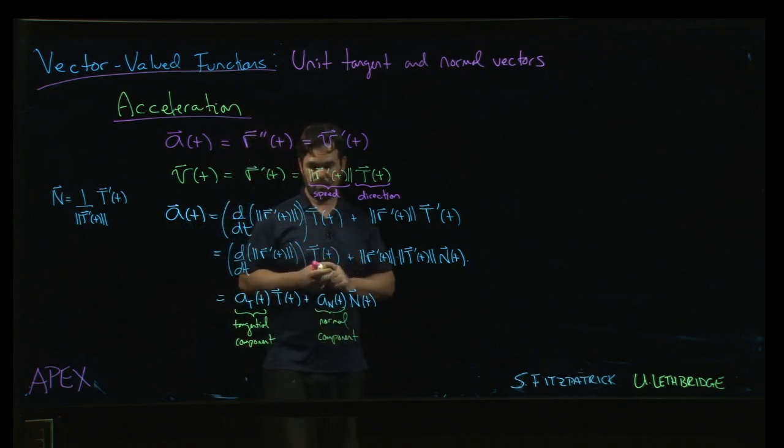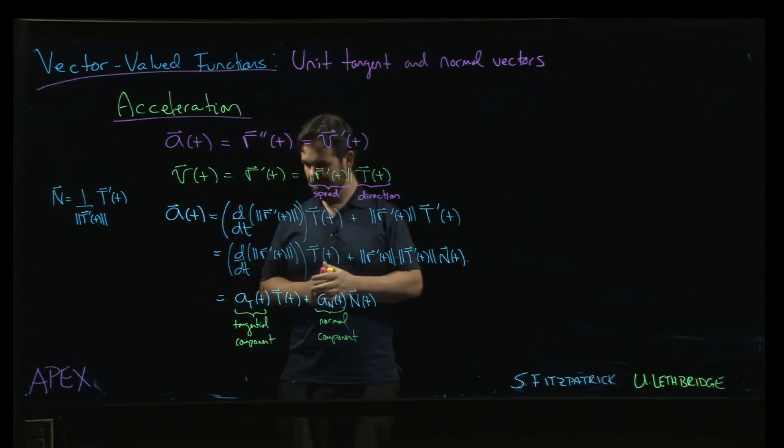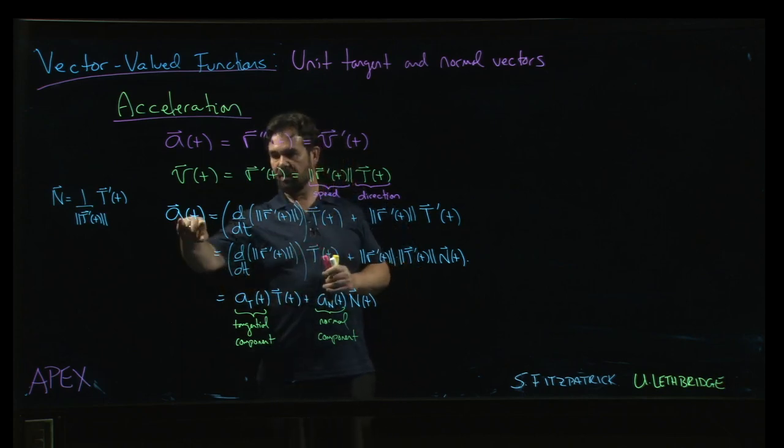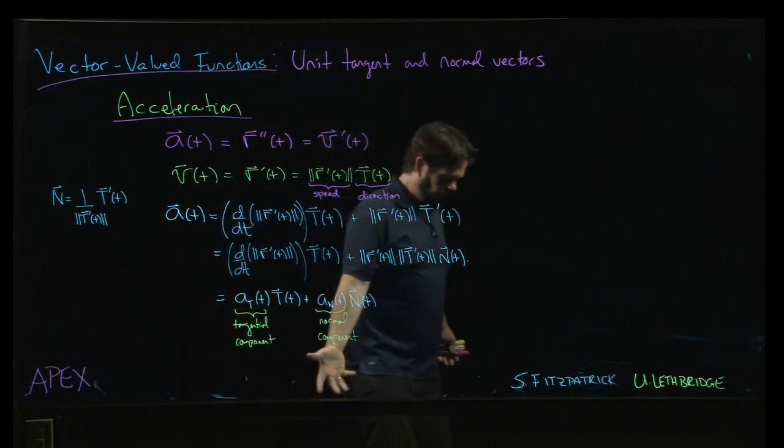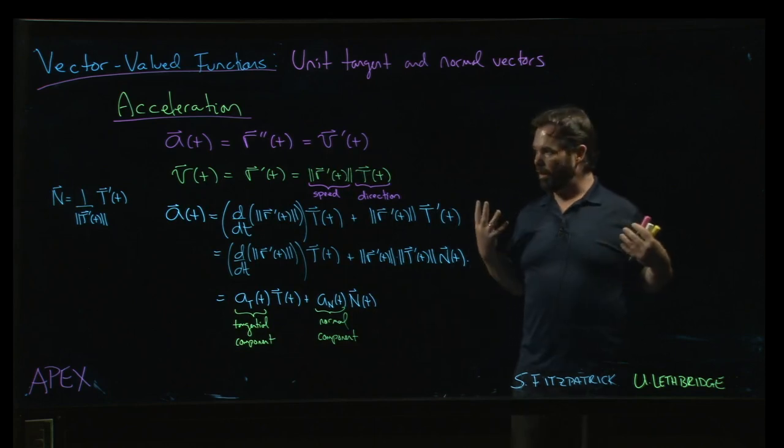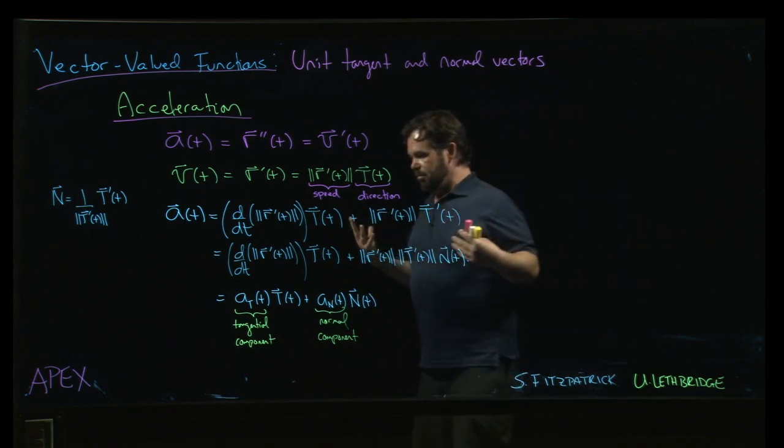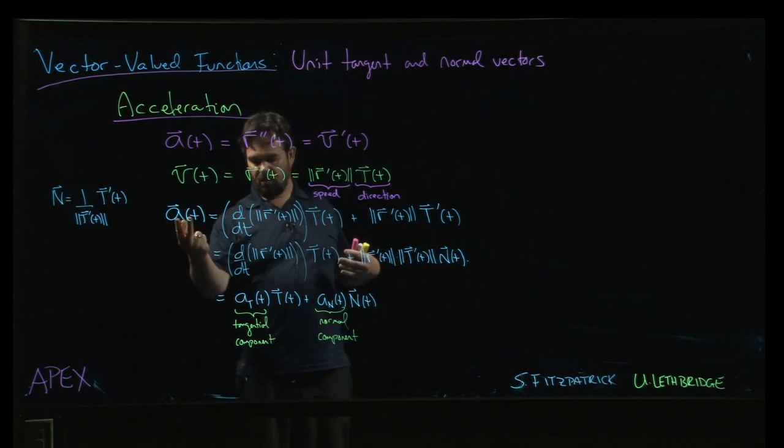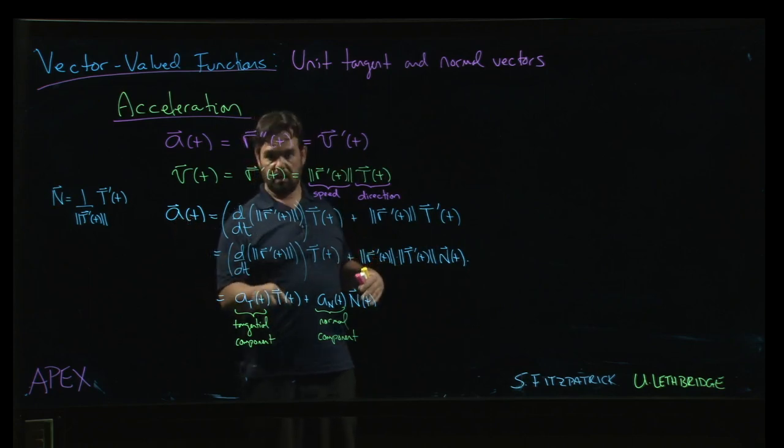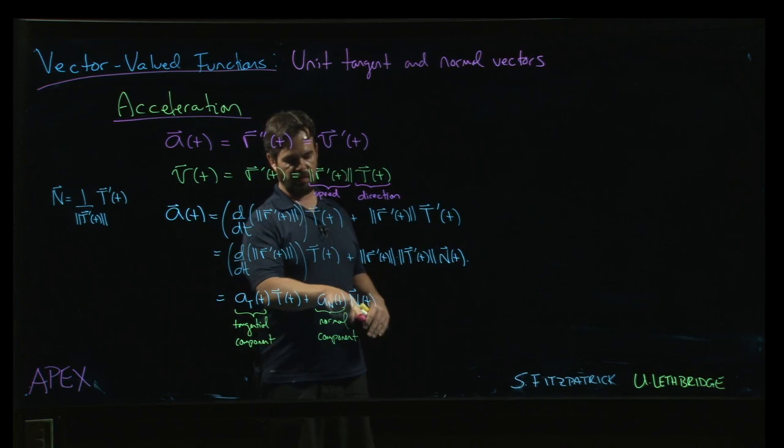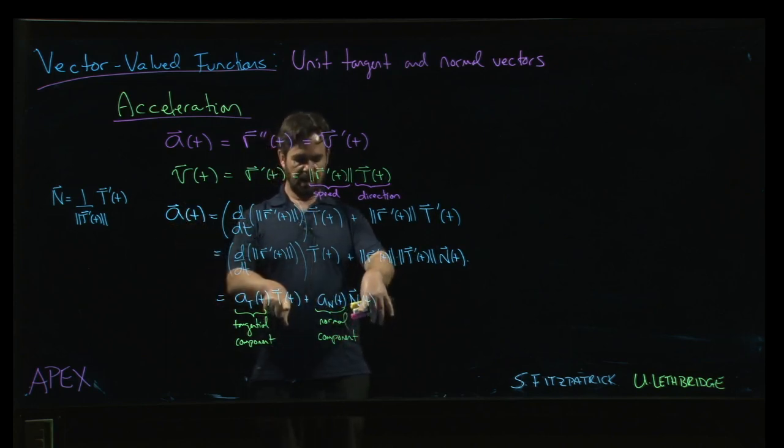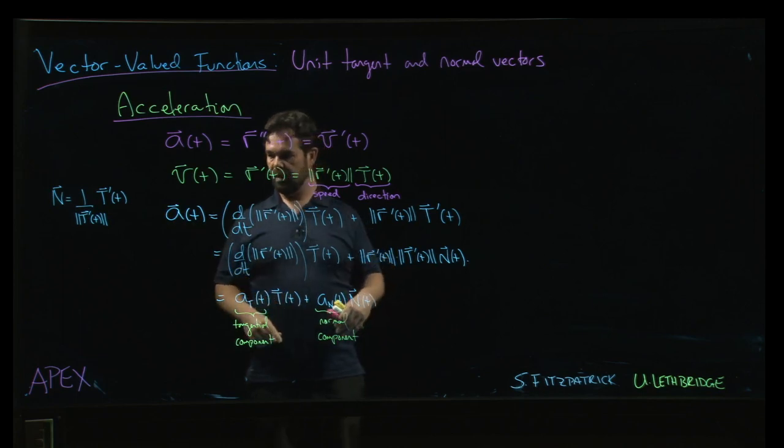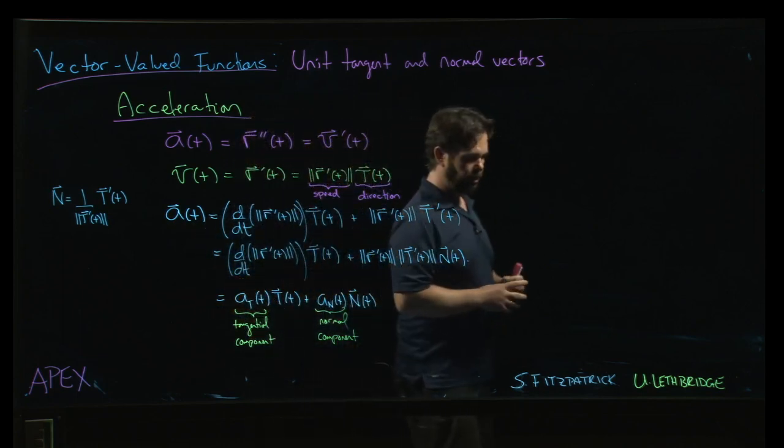So that's pretty cool. Also, notice that the acceleration in all cases, because we didn't say anything about what this vector valued function is, we said nothing about what r of t is. The acceleration is always a linear combination of the unit tangent vector and the unit normal vector. So it always lies in a plane spanned by these two vectors. So the acceleration is always in that plane.